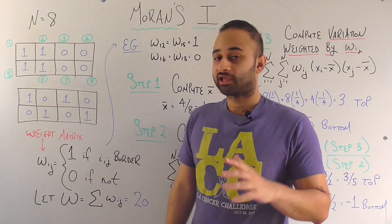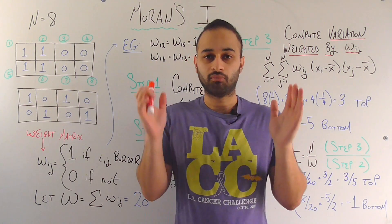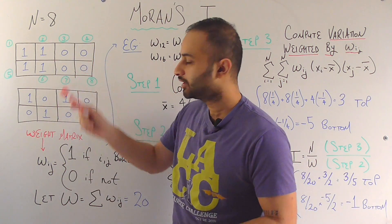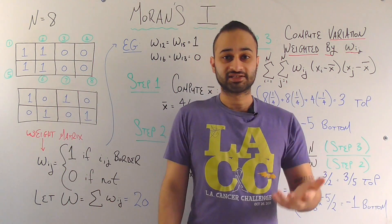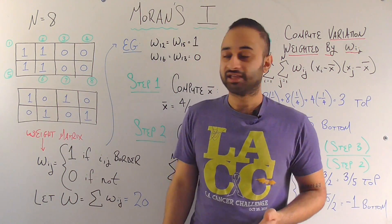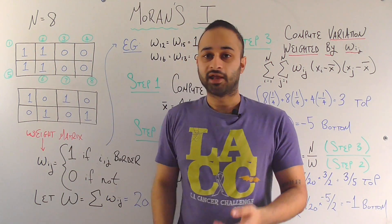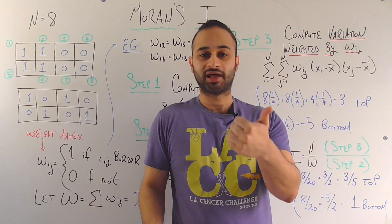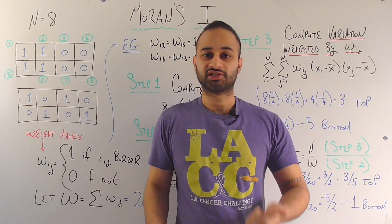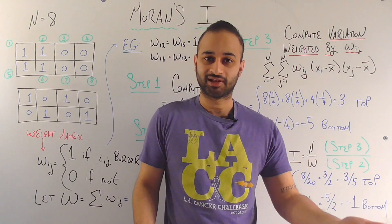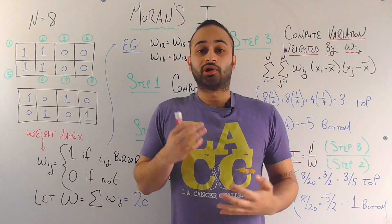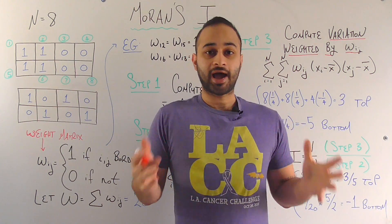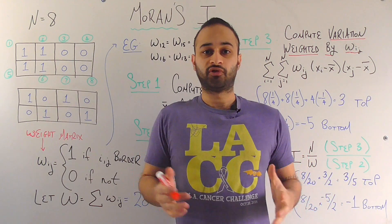Let's pretend we're looking at the same example but with a much smaller country. This country has eight states — each state is one of these cells. A value of one means that state voted Republican in the last election, and zero means it voted Democrat. We're going to look at two possible scenarios and compute Moran's I for each one.